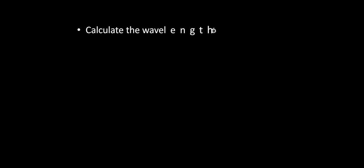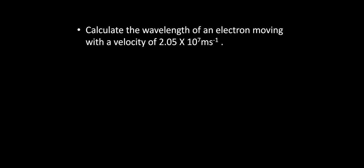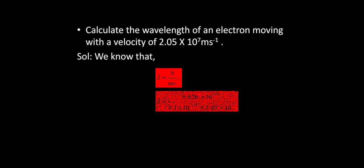Problem 2: Calculate the wavelength of an electron moving with a velocity of 2.05 × 10⁷ m/s. Using lambda equals h by mv, with the mass of the electron 9.1 × 10⁻³¹ kg and the given velocity, the wavelength is 3.55 × 10⁻¹¹ m.